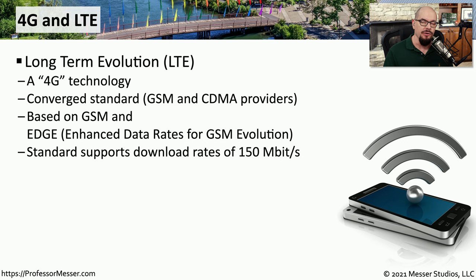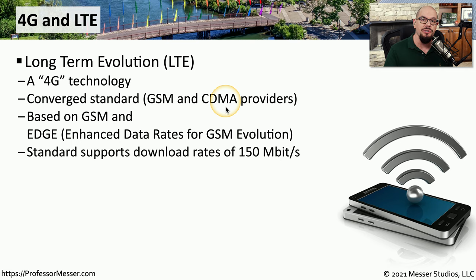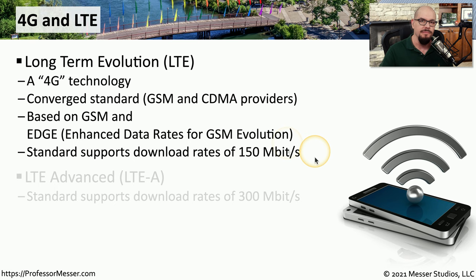Eventually, we needed some way to merge together these two very diverse technologies, and we did that with the introduction of 4G and long-term evolution, or LTE. This allowed us to converge the two standards of GSM and CDMA providers into a single shared standard. It also increased the total amount of bandwidth available on these links to a maximum theoretical throughput of 150 megabits per second.